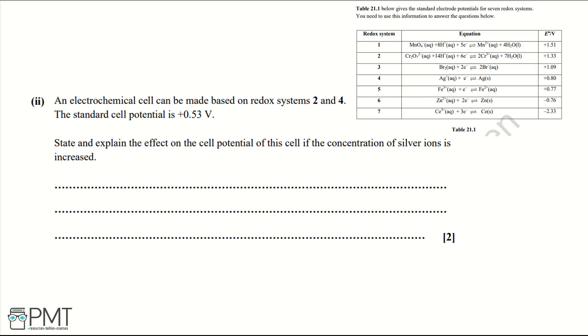Looking at redox systems 2 and 4, in system 2 there's no silver ions present, but in 4 we have silver ions present. If we increase the concentration of the silver ions, the equilibrium is going to shift right and that's going to increase the electrode potential of redox system 4.